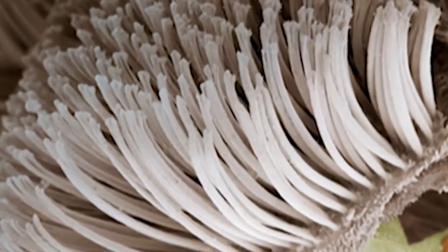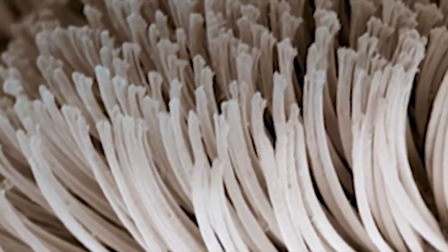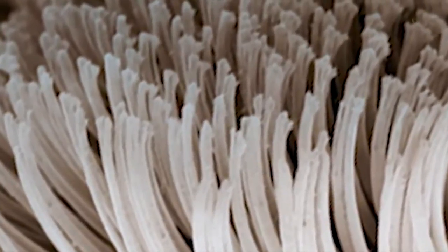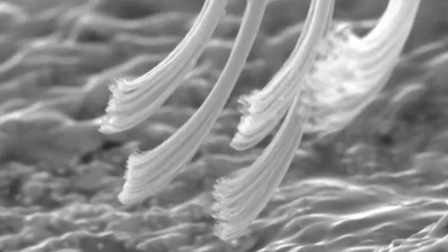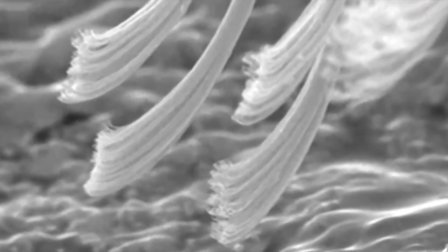A gecko's toe is comprised of leaf-like structures with millions of tiny hairs resembling a rug. Each one of those hairs is ten times smaller than a human's and has a horrible case of split ends. About a hundred to a thousand nano-sized split ends, and one gecko alone has two billion of these.